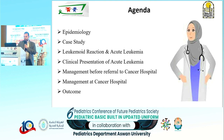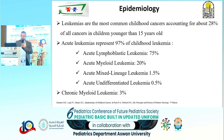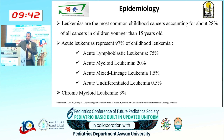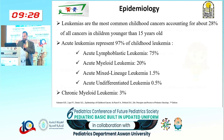The leukemias are the most common childhood cancer, accounting for about 28% of all cancers in children younger than 15 years old. Acute leukemia in children represents 97% of leukemia cases: Acute lymphoblastic 75%, Acute myeloid 20%, Acute mixed lineage leukemia 1.5%, Acute undifferentiated leukemia 0.5%. Chronic myeloid leukemia represents 3% — of course in adults, chronic is more common than acute.